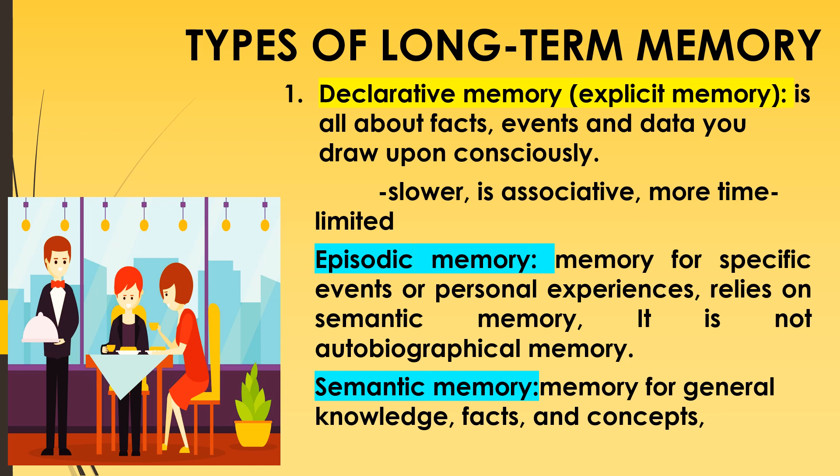The second type of declarative memory is semantic memory. It is memory for general knowledge, facts, and concepts — for example, the capital of the United States or the definition of any term, such as the definition of long-term memory. Those are stored in semantic memory. It involves facts about the world.